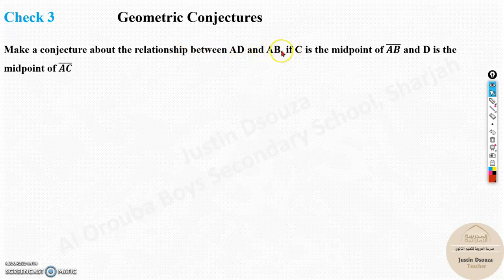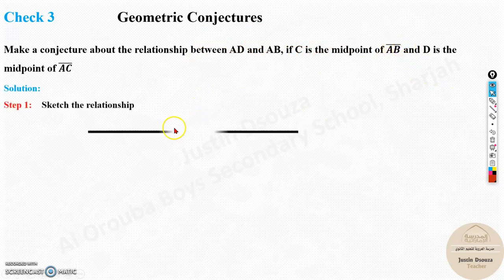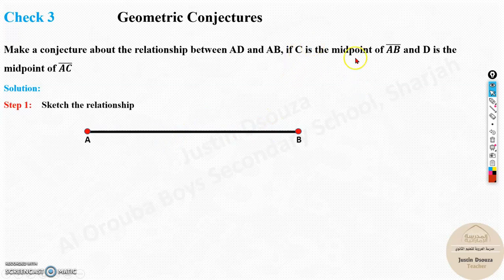AD and AB - the relationship between these two. If C is the midpoint of AB, let's draw a straight line. This is A and B. C is the midpoint, so this is the midpoint. And D is the midpoint of AC. There's one more point in the middle of AC. So this is the midpoint of it.